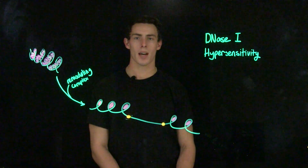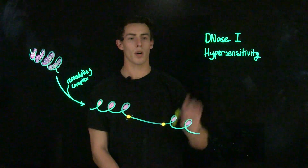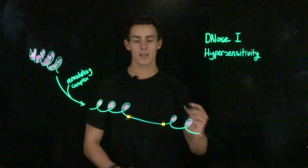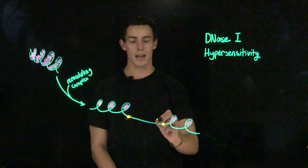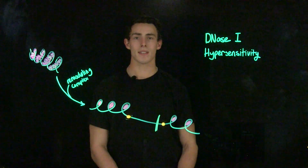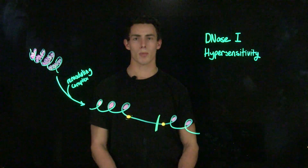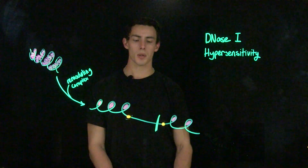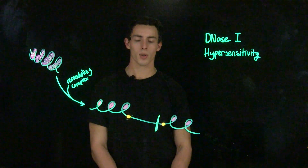DNase-1 hypersensitivity means that an enzyme, DNase-1, which is a DNA digesting enzyme, can easily bind and cleave DNA at one of these hypersensitivity sites, meaning that the DNA is highly exposed because it's been remodeled for transcription. Thus, DNase-1 can be used to tag transcriptionally active regions of eukaryotic chromosomes.